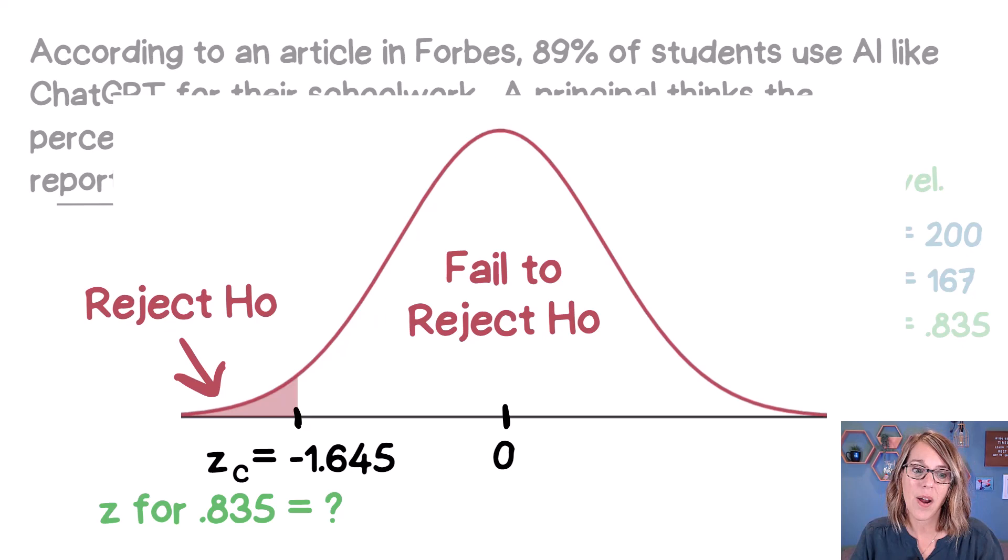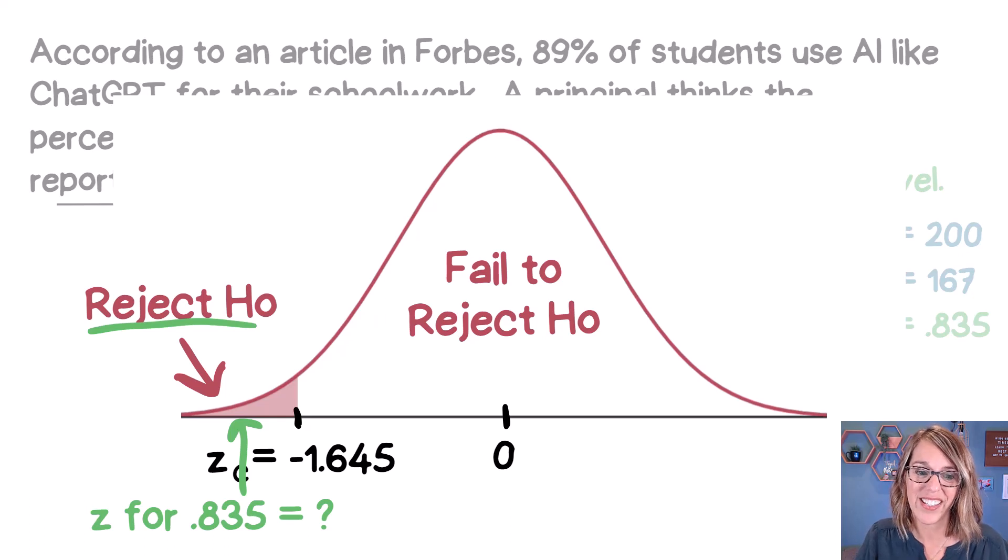If we are beyond negative 1.645, so more than 1.645 standard deviations below, then we're going to end up rejecting the null hypothesis. If we aren't, we're going to end up failing to reject the null hypothesis.